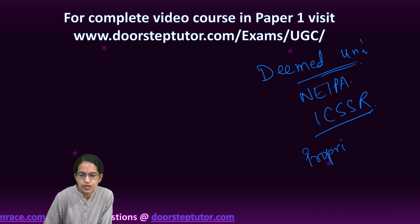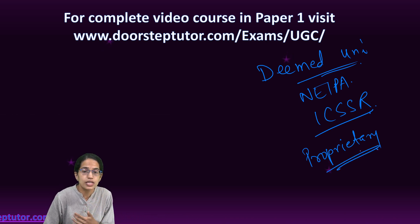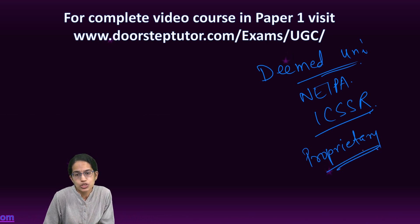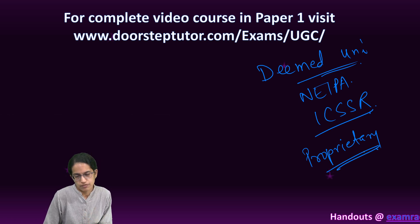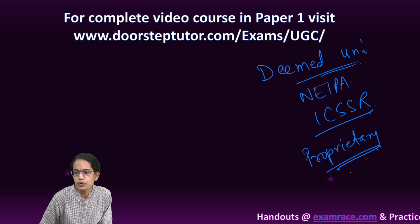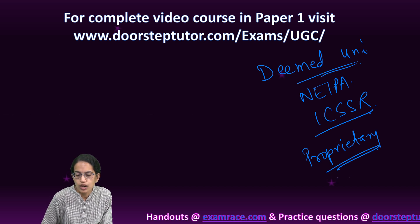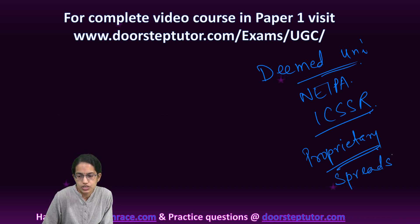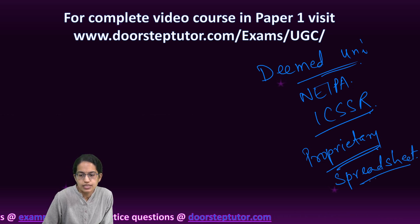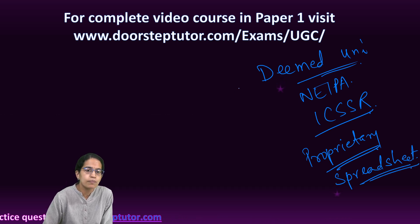From the ICT section there were questions on proprietary software — the disadvantages of proprietary software over open source software. For example, ArcGIS is a proprietary software whereas QGIS is an open source software, so what are the advantages and disadvantages of both.